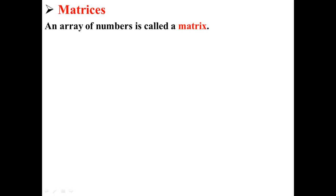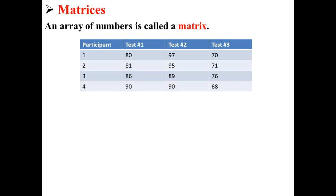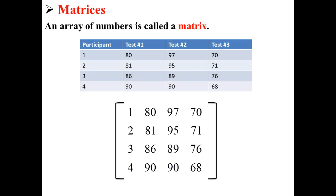An array of numbers is called a matrix. Here we have some data for four participants and their scores on three different tests: test one, test two, and test three. Below we've rewritten this information to be displayed in a matrix. Here we still have the same information, the participant numbers and their test scores on tests one, two, and three. It just looks a little bit different.